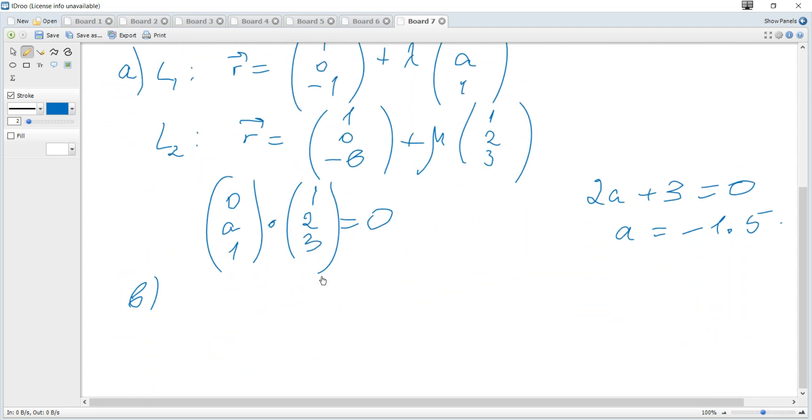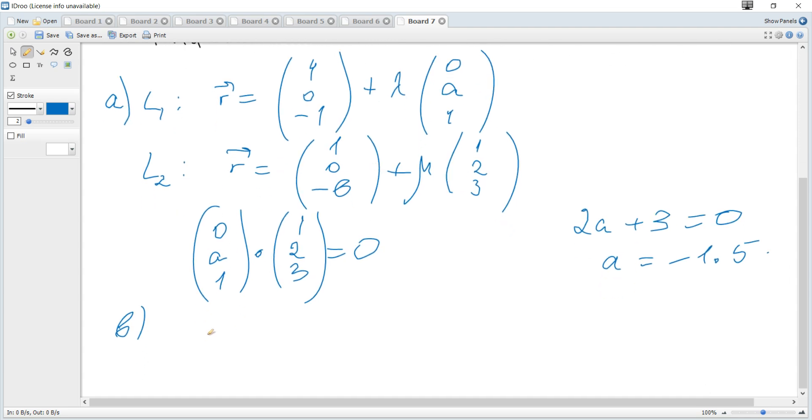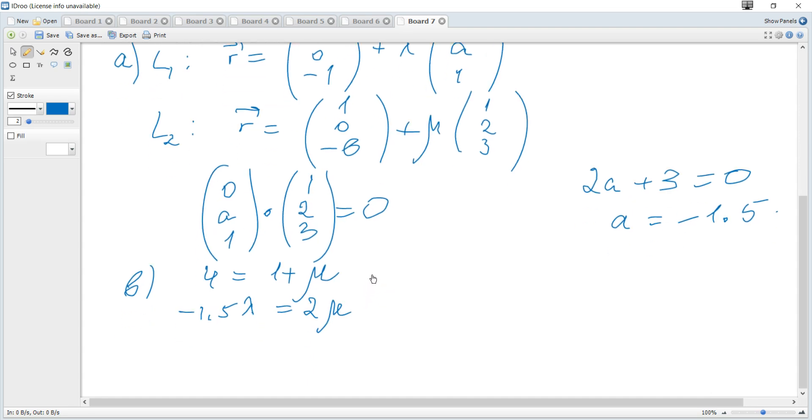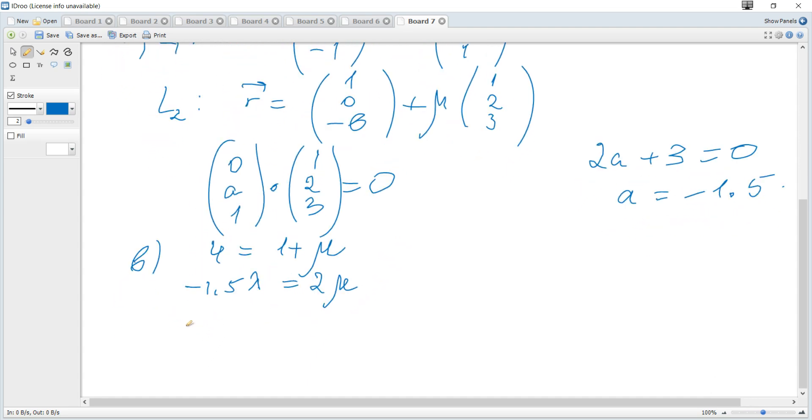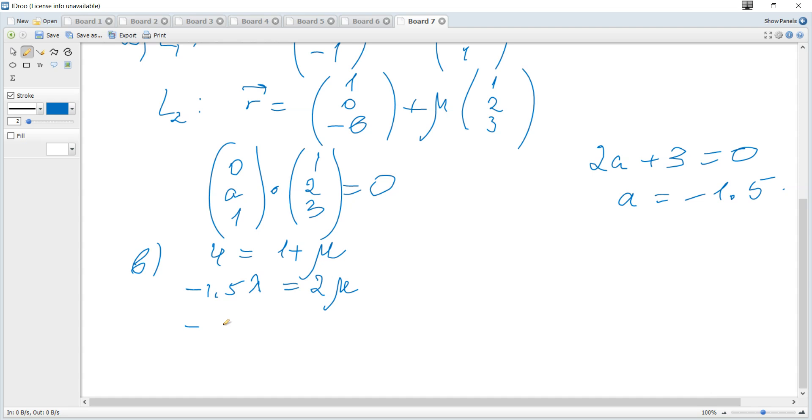X is x, y is y, z is z. So it becomes 4 equals 1 plus mu. Since lambda is negative 1.5 lambda, that should be 2 times mu. And negative 1 plus lambda is negative B plus 3 mu.